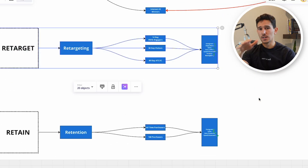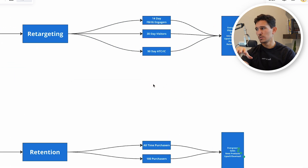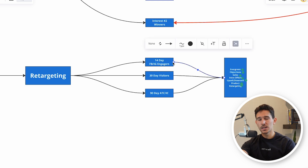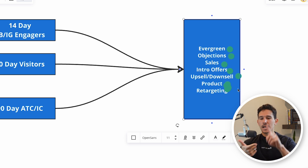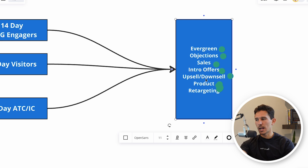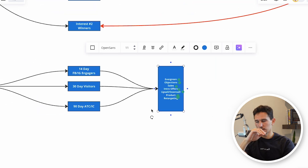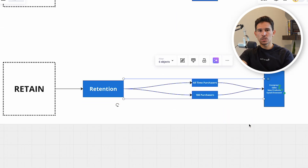We saw a really good retargeting setup already in this account, so we're not going to do anything different there. Generally, we want a retargeting campaign with 14-day Facebook and Instagram engagers, 30-day site visitors to retarget, and then 90-day add-to-cart or initiate checkout. Anyone who's added products to the cart, we want to retarget them with those same products. For the ads: evergreen ads, objection ads, sale ads, intros, offers — super important. We saw upsell and downsell already in this campaign. And then the retention-based campaign will have all-time purchasers and 180-day purchasers, just spending $5 to $20 a day to stay top of mind with anyone who's ever purchased from us.